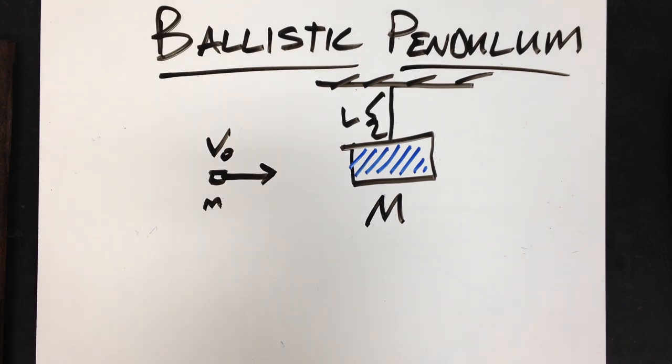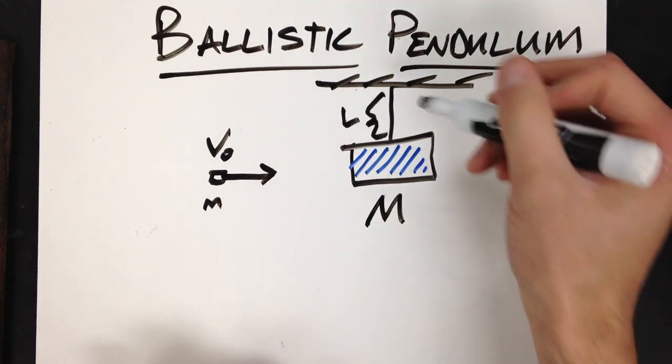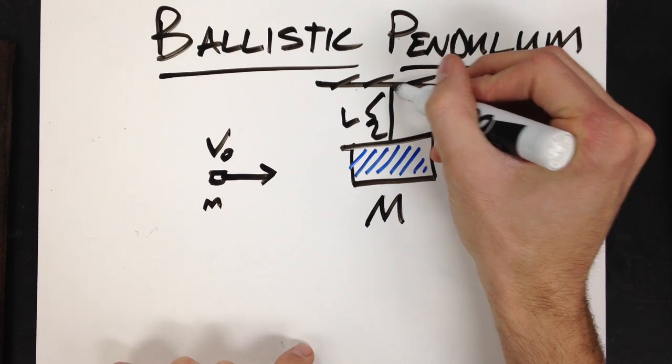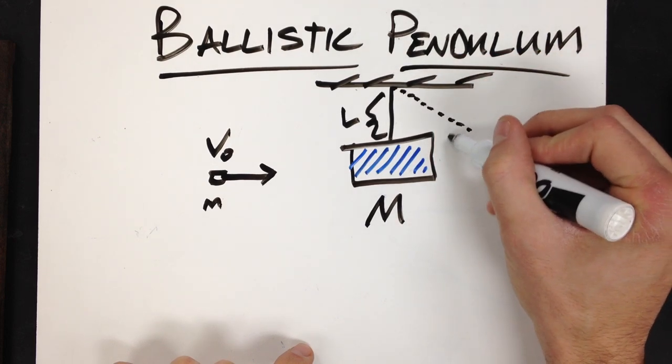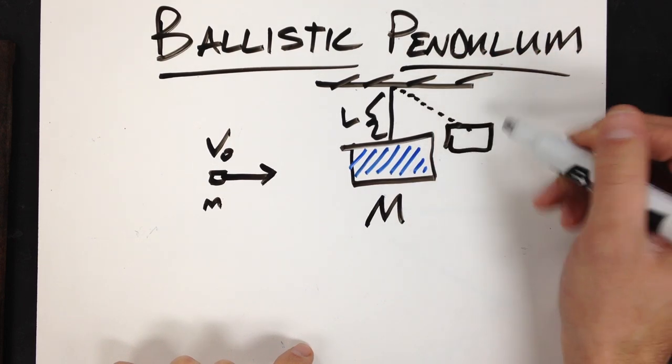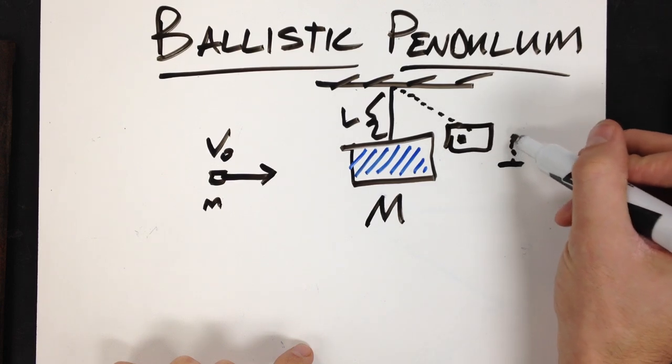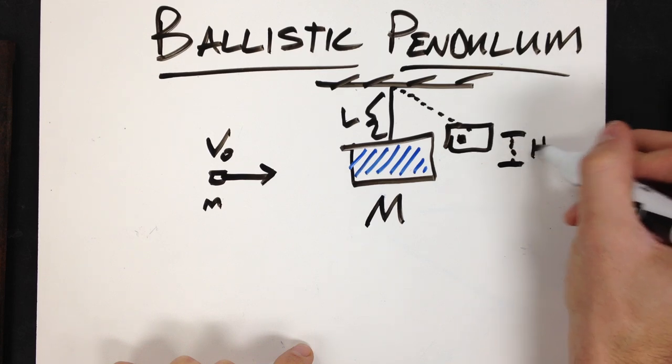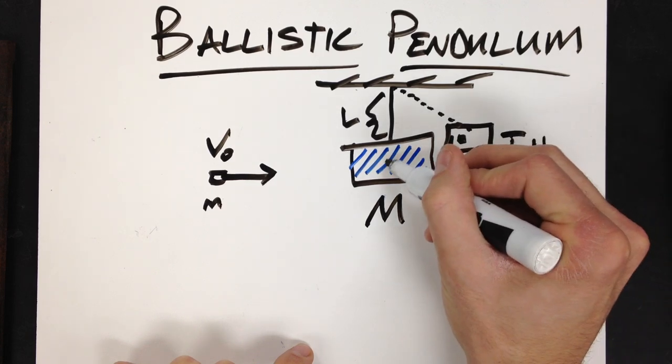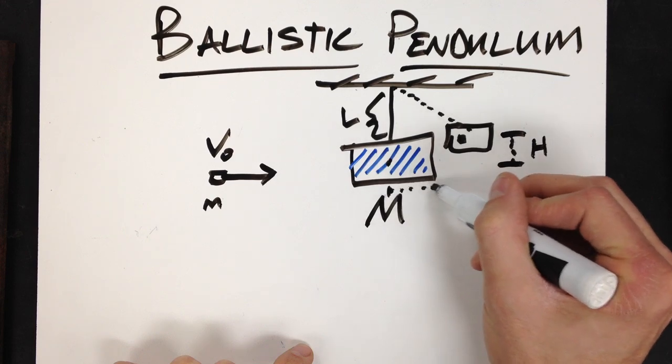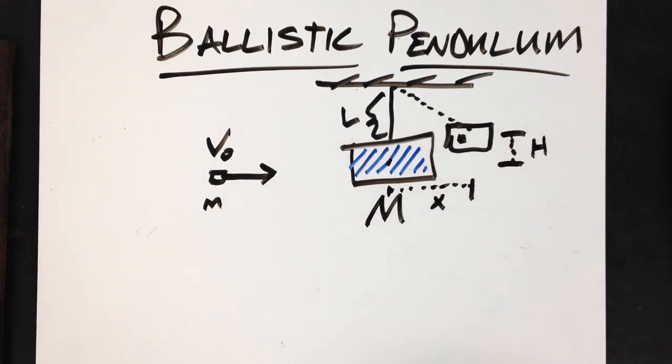When this bullet hits and embeds itself in the block, the block will swing up and swing out, and here's our bullet inside. So it will swing up a certain height h, and it will swing out a distance we'll call x.